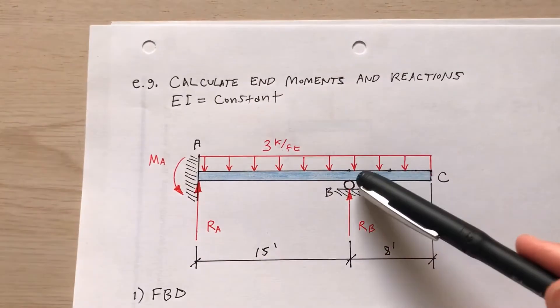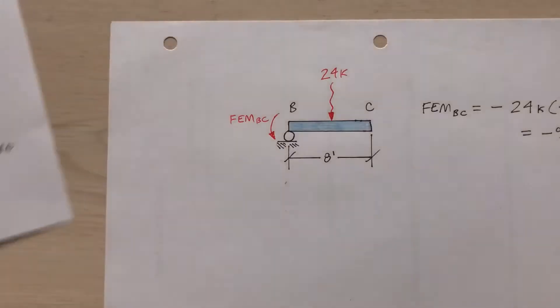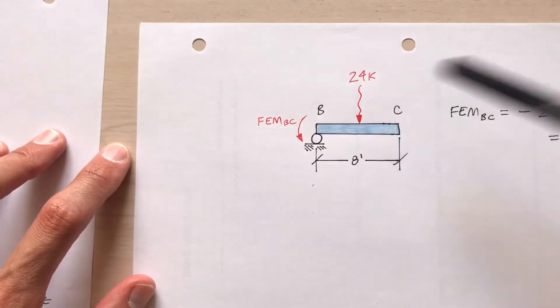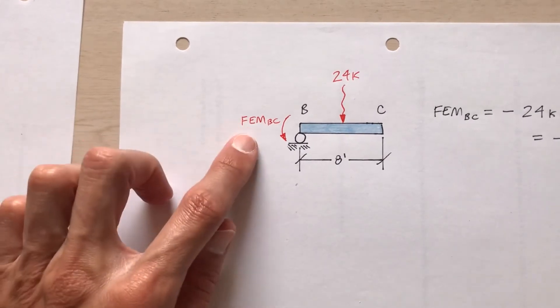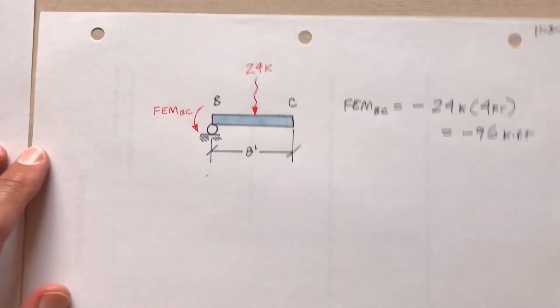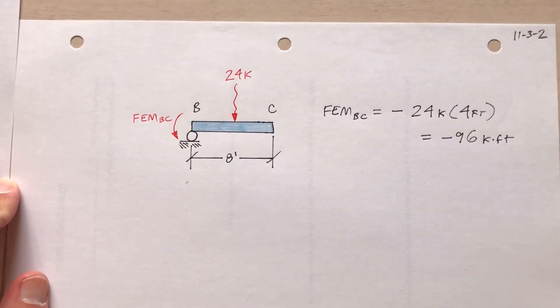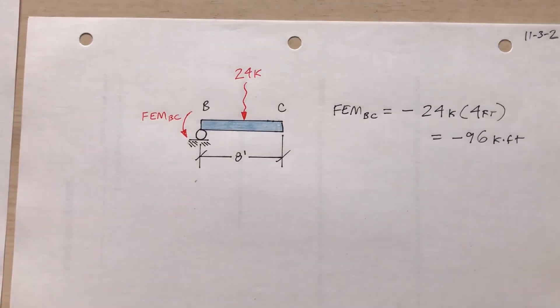That's the 24, the resultant. It acts four feet from point B. The fixed end moment would be the internal beam force. So I say negative 96 because it's in the anti-clockwise or counterclockwise direction. So that's my fixed end moment to BC, negative 96.